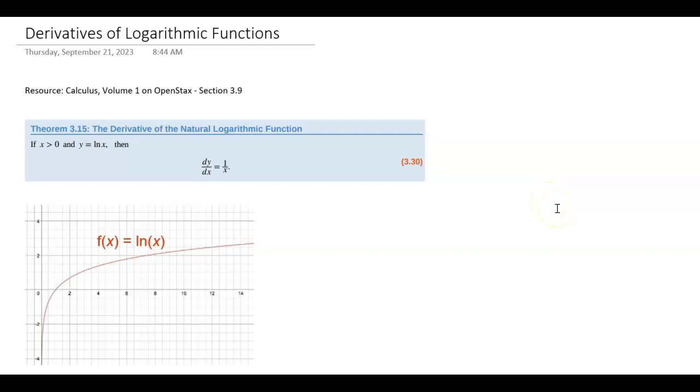All right, the last parent function type derivative we need to talk about is natural log. The derivative of natural log ends up being 1 over x, and this one isn't quite as easy to see.